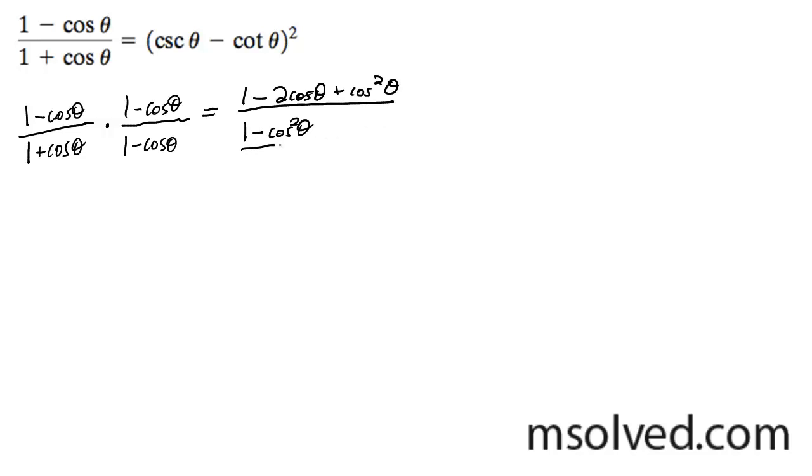And this 1 minus cosine squared theta can be turned into sine squared theta as a trig property. So I'm going to write this out here.